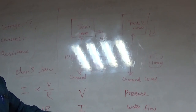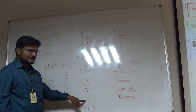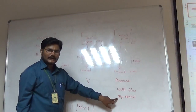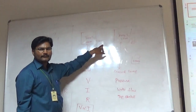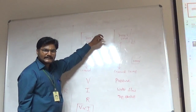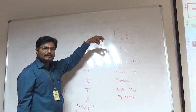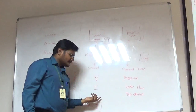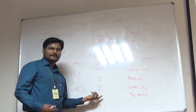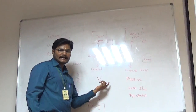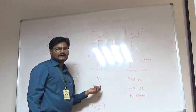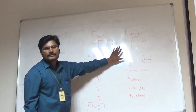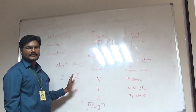Now we can talk about the third term, resistance. What is resistance? It opposes the flow of electrons. Here I am going to relate it with the plugging of a tap. Why do we use a tap in a tank? In order to resist the water flow. Similarly, resistance is used to limit the flow of electrons in the circuit. This is the practical example related to Ohm's law.